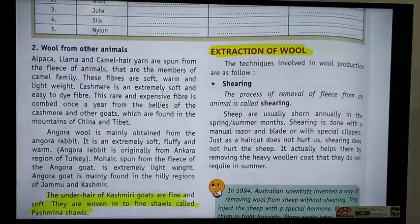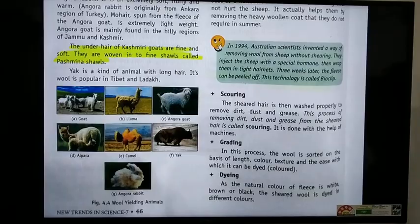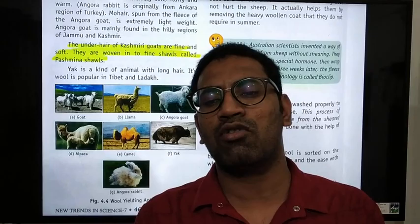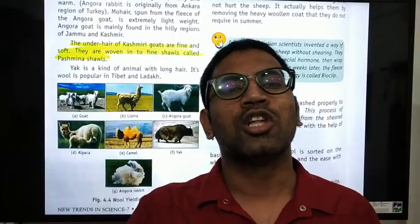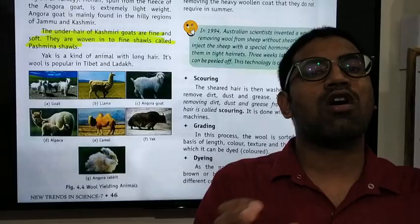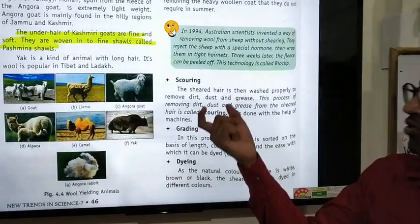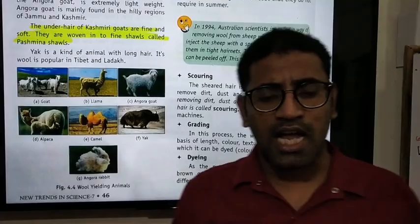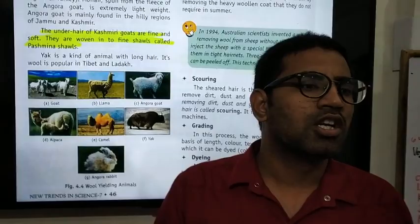The next step is scouring. The sheared hair contains dirt, dust, and grease, so we wash it in a tank. The process of washing the sheared hair is called scouring. Today machines are used for scouring, whereas before it was done by laborers.